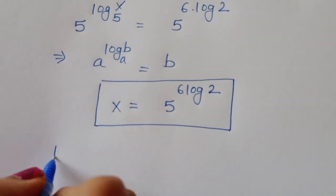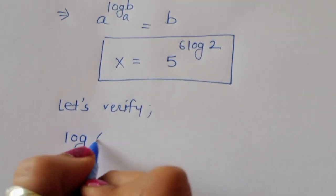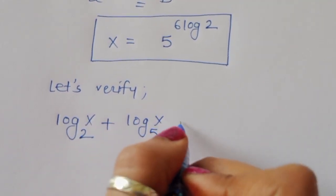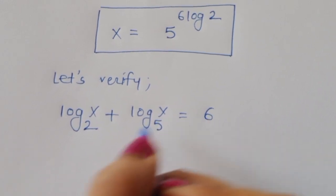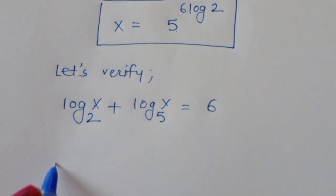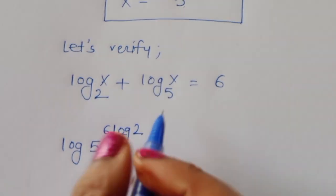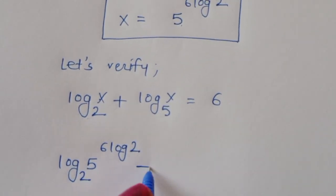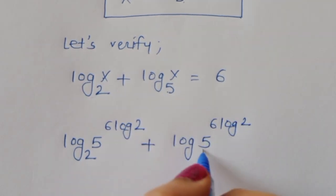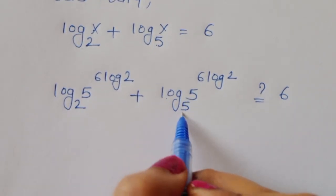Let's verify whether this is correct. The question is: log of x to the base 2 plus log of x to the base 5 is equal to 6. We substitute x equals 5 to the power [6 log(2)]. So we write: log of [5^(6 log 2)] to the base 2 plus log of [5^(6 log 2)] to the base 5, question mark 6. Now log of 5 to the base 5 equals 1.